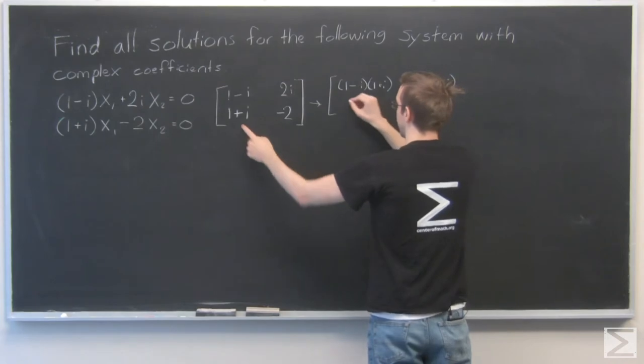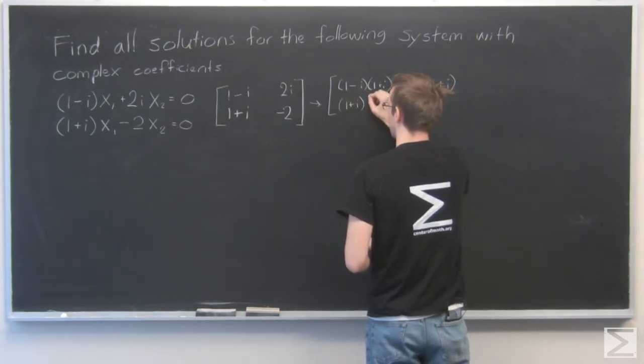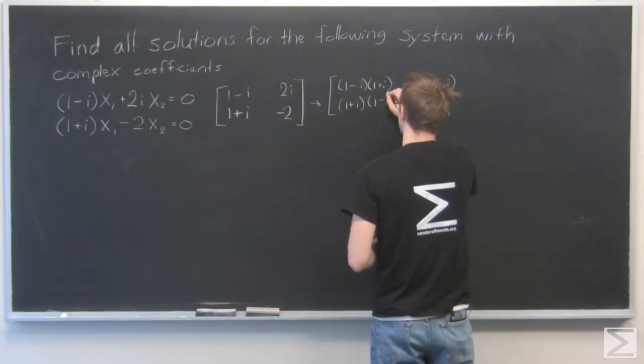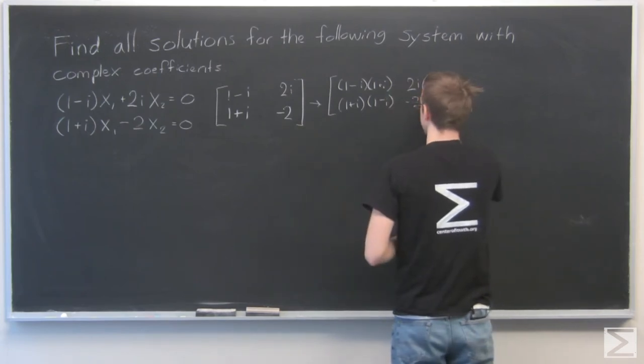And this becomes 1 plus i times 1 minus i, and I need to multiply negative 2 by 1 minus i.